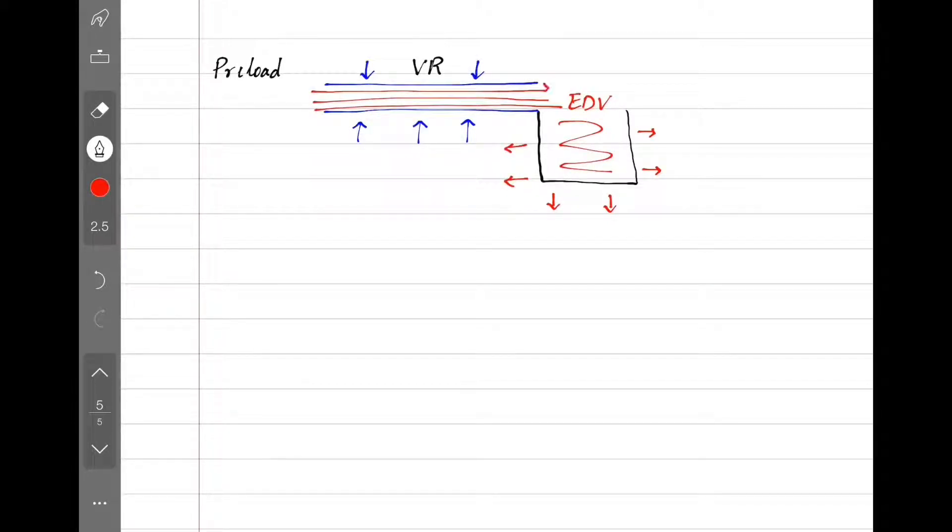That brings us to preload, which is the outward stretch of myocardium by blood at the end diastolic volume. The more the end diastolic volume, the more the stretch. How do we get more end diastolic volume? By increasing venous return. And how do we increase venous return? By constricting the veins or by having more blood in our system.